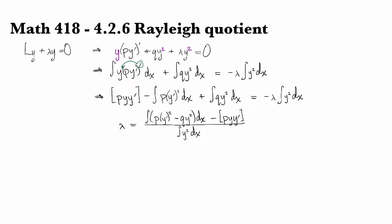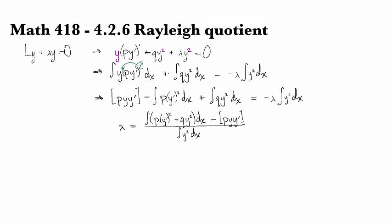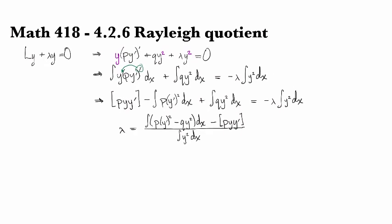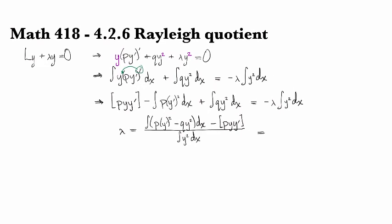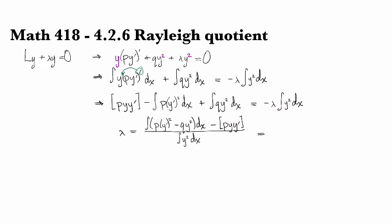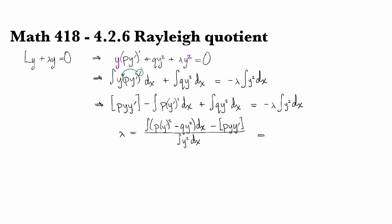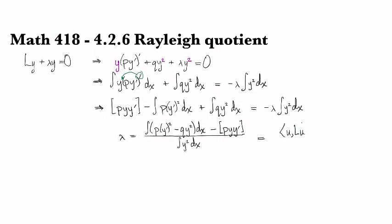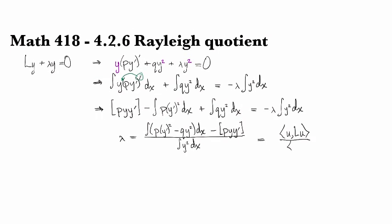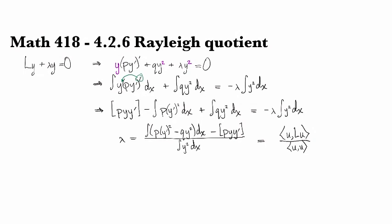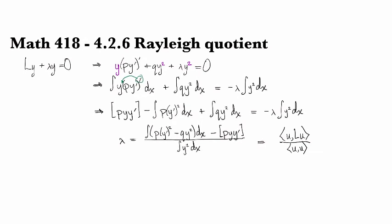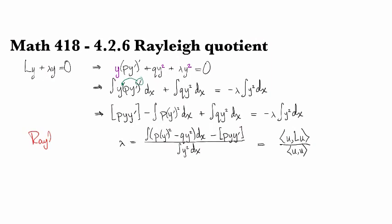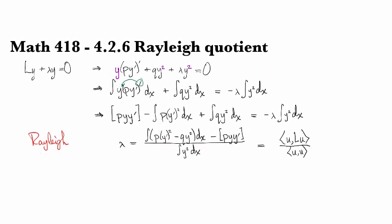And this whole thing is going to be divided by y squared dx. And so this is what's known as the Rayleigh quotient. So this is, in a more general context, uLu over uu. And so, as I said, this is called the Rayleigh quotient.